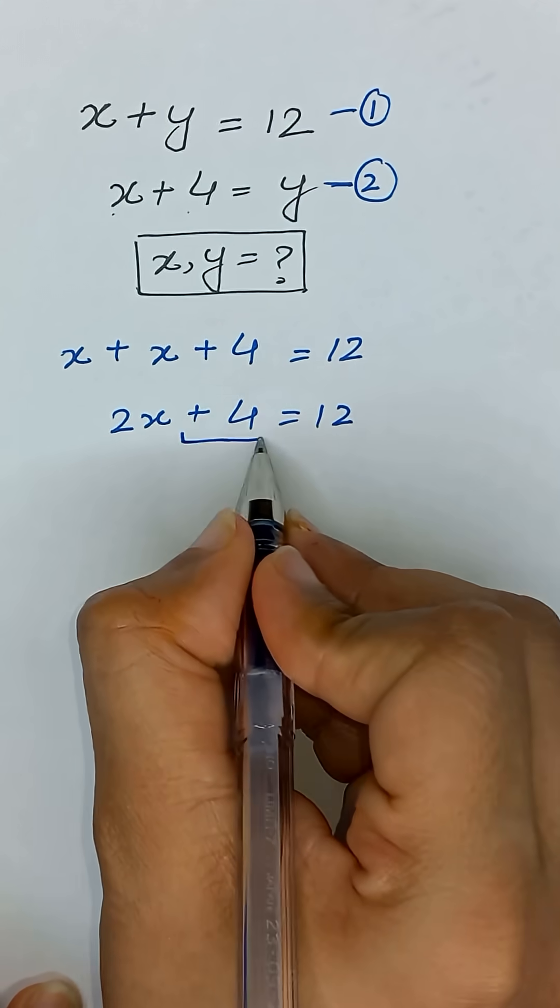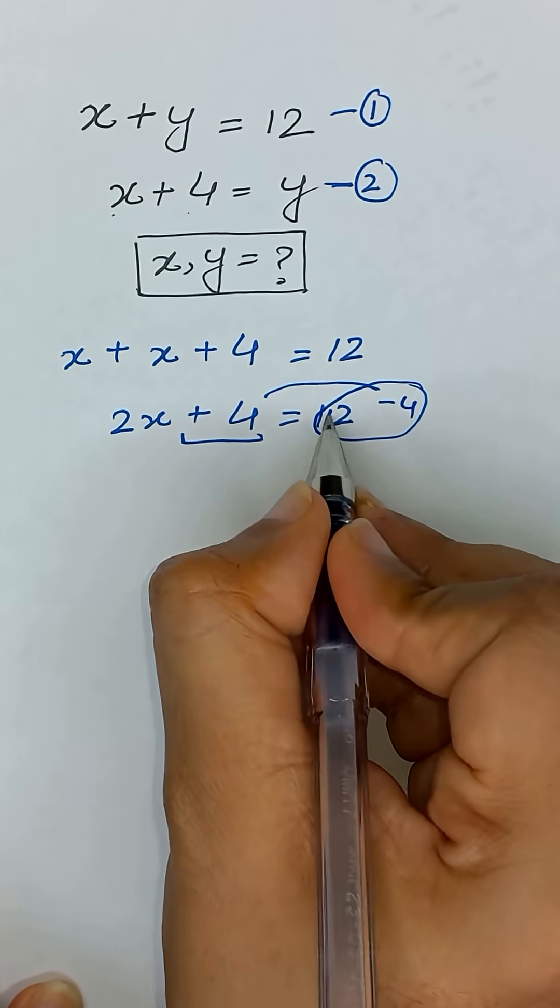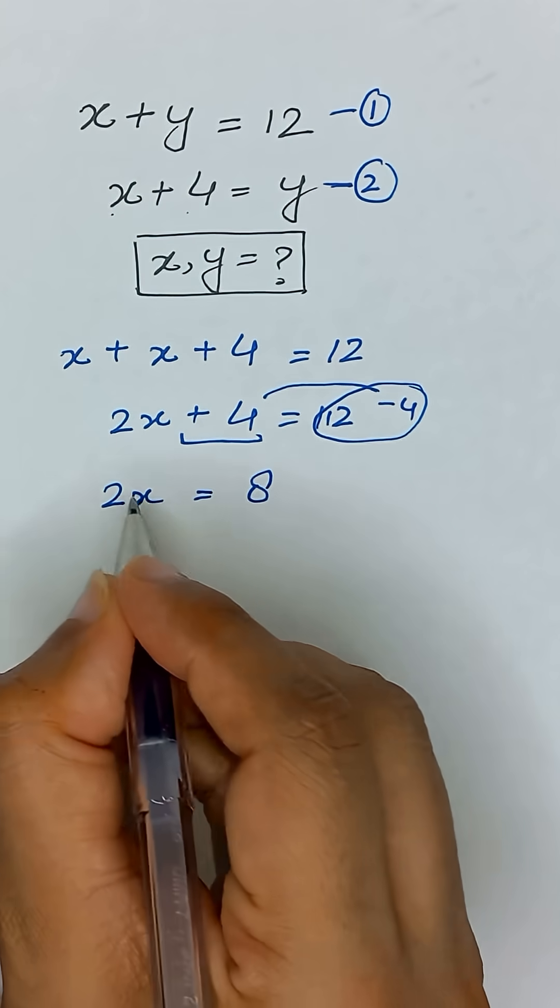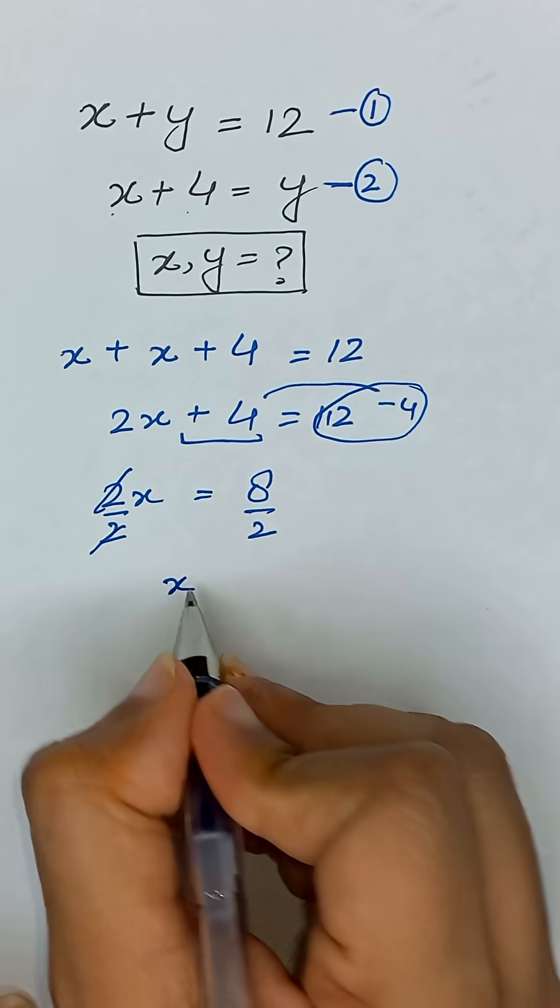Now we will take this positive 4 to the right hand side, so it will become minus 4. So this 12 minus 4 will give us 8. To find the value of x, we will divide 2 on both sides. So x will be equal to 4.